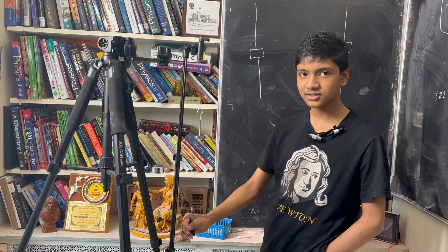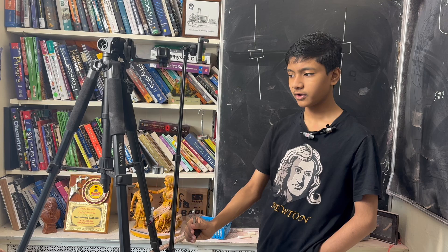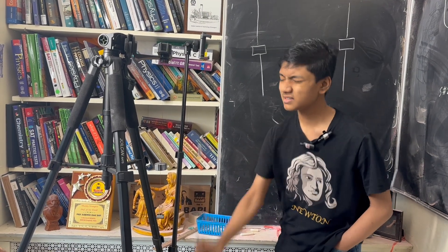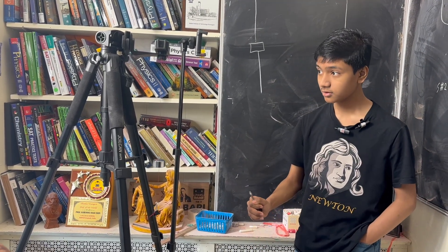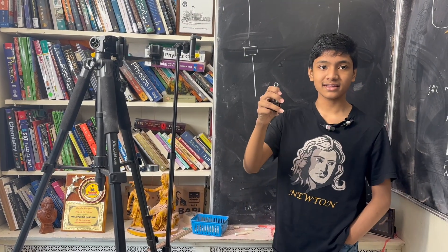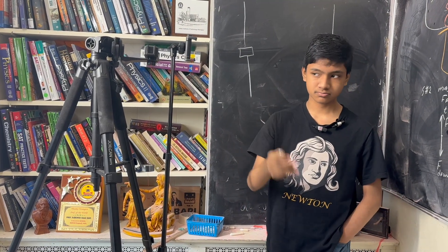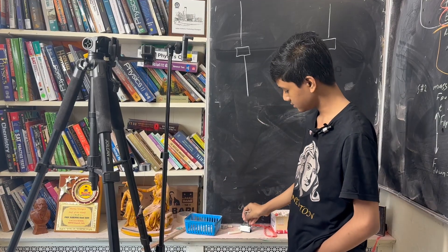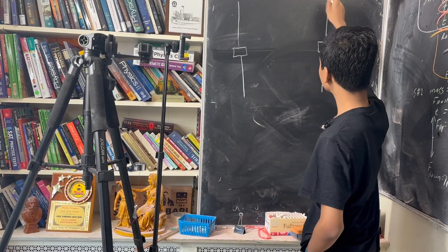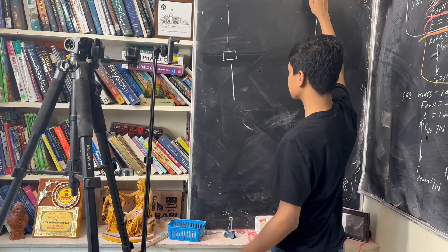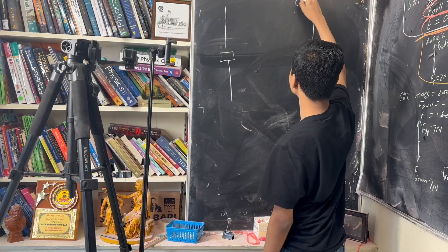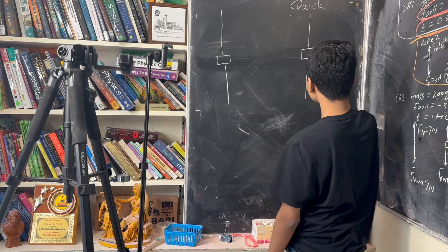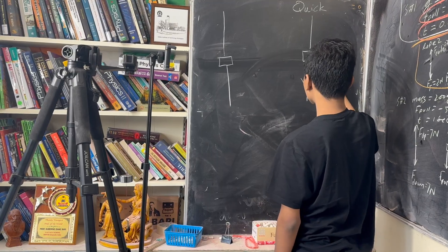Let's find out by pulling this one very quickly. Three, two, one. It looks like the second rope broke well before the first. So the quick pull caused the second rope to break.